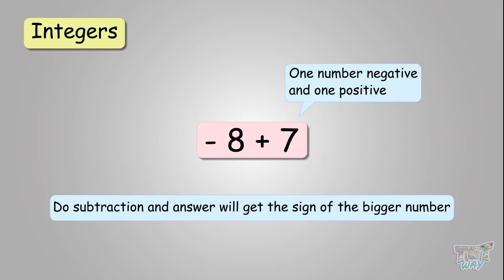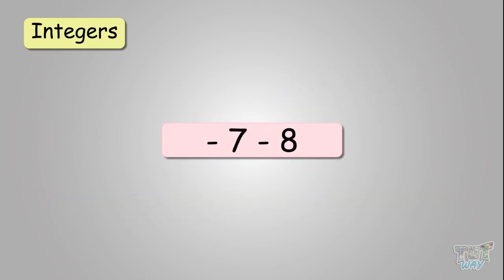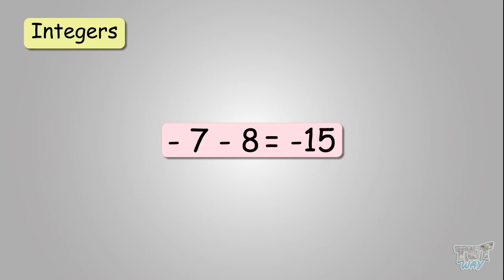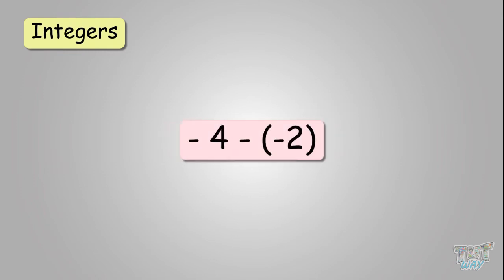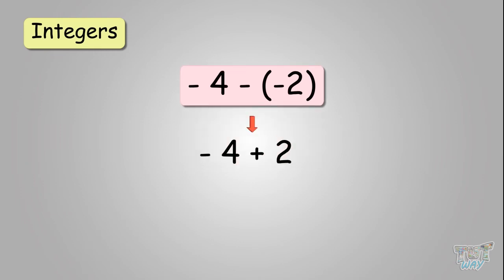Now let's do some sums quickly. Negative seven minus eight — both are negative, so you add them to get negative fifteen. Then minus three minus two gives negative five. Negative four minus negative two — replace the two signs with a positive sign, so it becomes negative four plus two. You take the sign of the larger number, which is negative, so the answer is negative two.